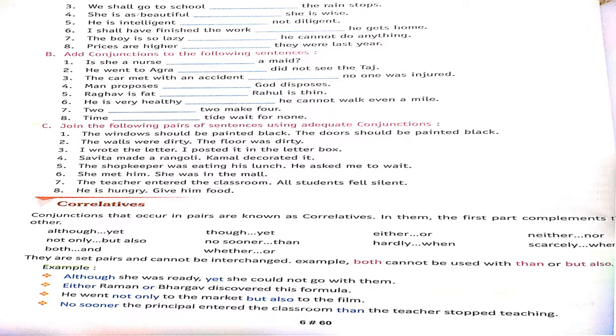Like your first question, look carefully as they are very easy. The windows should be painted black. The doors should be painted black. So: The windows and the doors should be painted black.